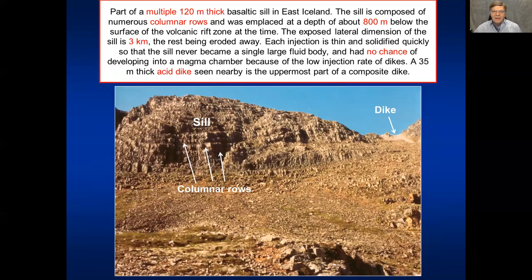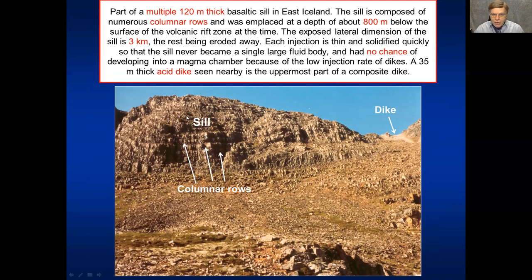Here is a multiple 120-meter-thick sill in east Iceland that never became a magma chamber, because it is composed of columnar rows where each injection solidified before the next one came in, so it never merged into a single fluid body. Being a multiple body with no chance to develop into a single fluid body, it could not develop into a real magma chamber.